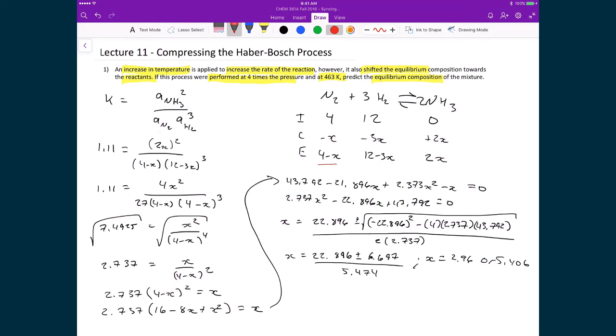And if I were to choose the answer 5.406 then I would get a negative number. And that means that I can immediately cross off that value and I'm going to use the 2.96.